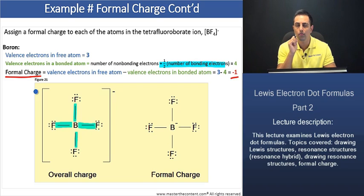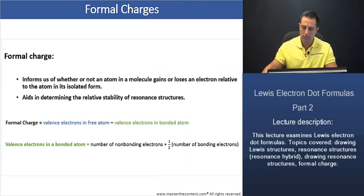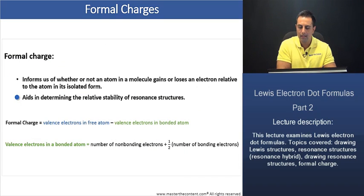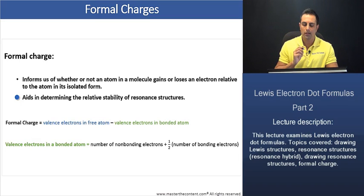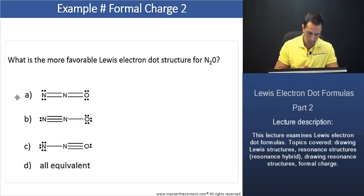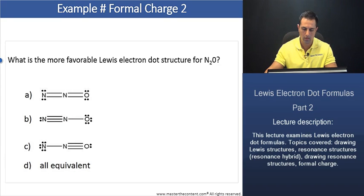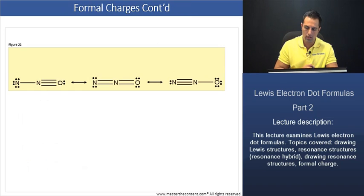Now, the real value of calculating formal charges comes from their application to resonance structures. Let's take a look at that next. Remember that second bullet that we had left alone? Let's take a look at that now. As it says here, formal charge aids in determining the relative stability of resonance structures. Let's do an example and really explain what that means. Here we're being asked, what is the more favorable Lewis electron dot structure for nitrous oxide? Is it going to be A, B, C or D? Let's do an explanation on the next slide here.